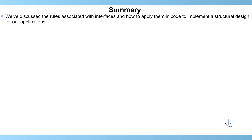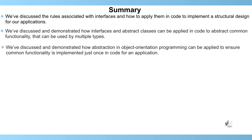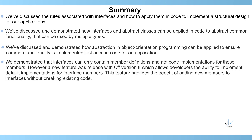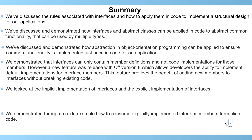We've discussed the rules associated with interfaces and how to apply them in code to implement a structural design for our applications. We've discussed and demonstrated how interfaces and abstract classes can be applied to abstract common functionality used by multiple types. We demonstrated that interfaces can only contain member definitions, but a new feature in C# version 8 allows developers to implement default implementations for interface members — providing the benefit of adding new members without breaking existing code. We also covered implicit and explicit interface implementations and how to consume explicitly implemented interface members from client code.